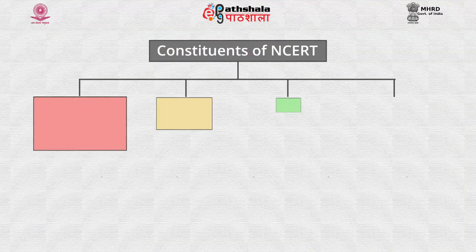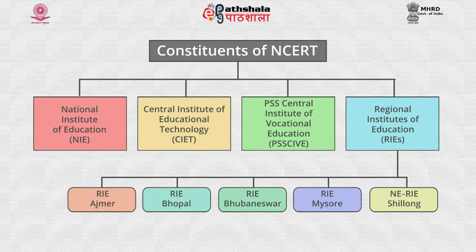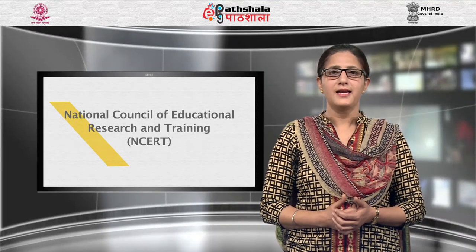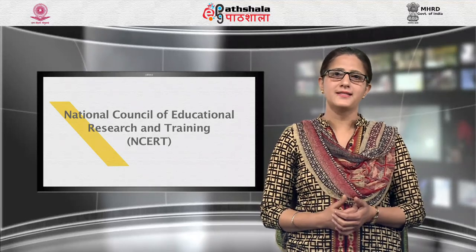As shown in the flow chart, NCERT functions through various constituent units like the National Institute of Education, NIE; Central Institute of Educational Technology, CIET; five regional colleges of education at Ajmer, Bhopal, Bhubaneswar, Mysore, and Shillong; and the last unit is Pandit Sundarlal Sharma Central Institute of Vocational Education. With a view to improve the quality of school education in India, NCERT provides support in many ways.